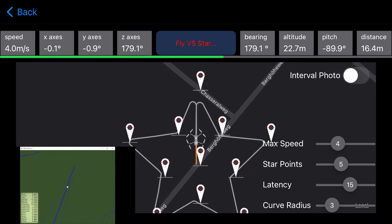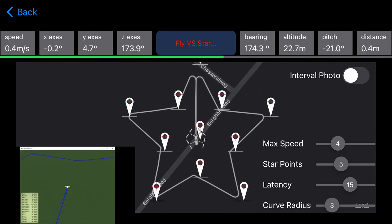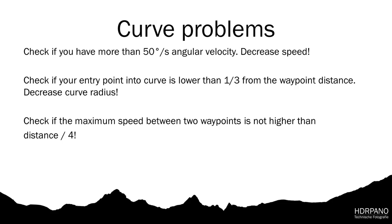Another advantage of using virtual sticks is that we are completely free to use actions wherever we need them — I will show that later in this video. Now let's look at some code. Check if you have more than 50 degrees per second angular velocity. Check if your entry point into the curve is lower than one third of the waypoint distance. Decrease curve radius if needed. Check that the maximum speed between two waypoints is not higher than the distance divided by 4.